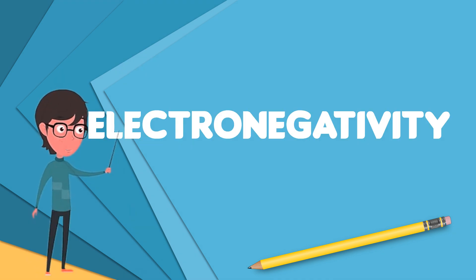Electronegativity, symbol chi, is a chemical property that describes the tendency of an atom to attract a shared pair of electrons towards itself.